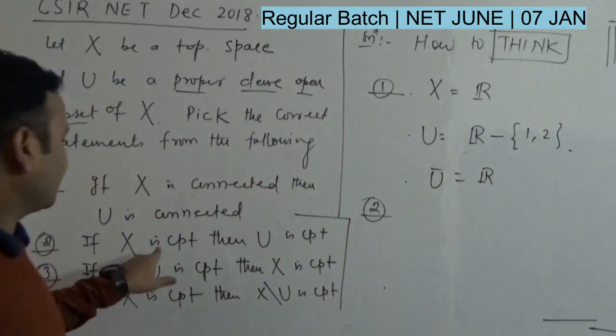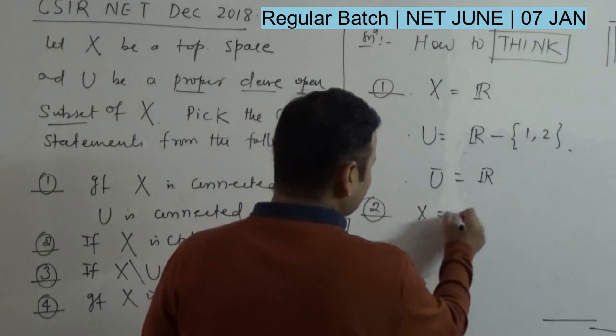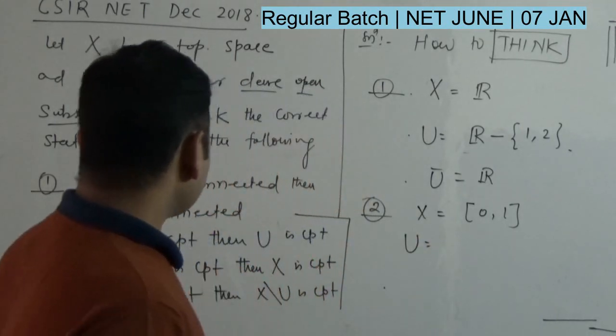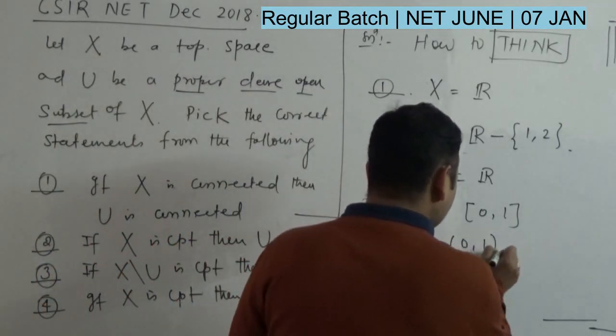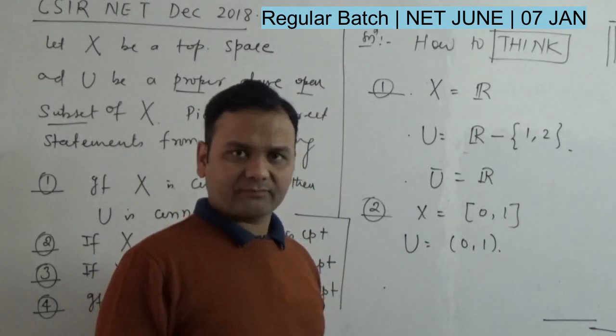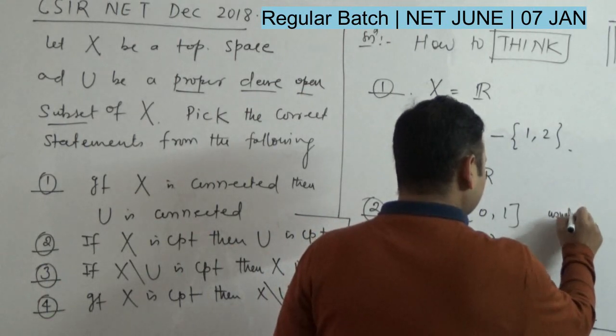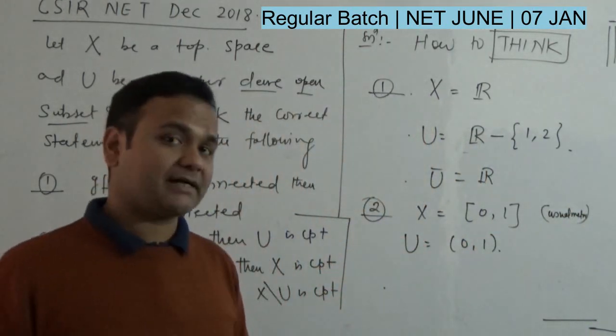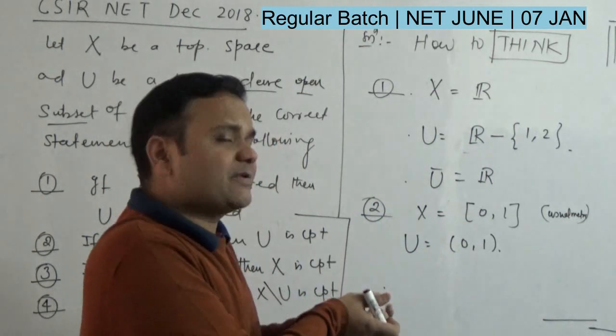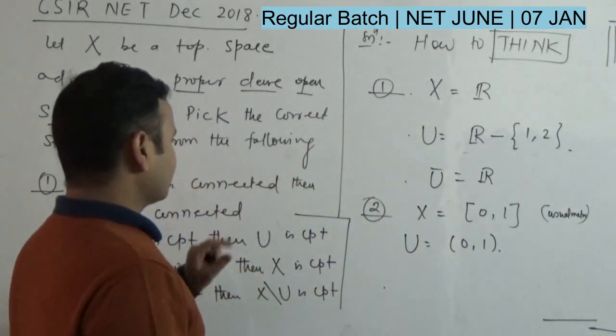Let's go to the second option: if X is compact then U is compact. Take X equal to the closed interval [0,1]. And U you can take as the open interval (0,1). So this is a proper subset, this is dense here, and this is open. This is the usual metric. Every metric space is a topological space. So check: this option is false. U is not compact.